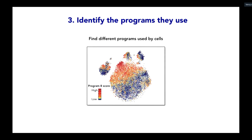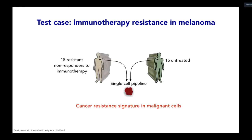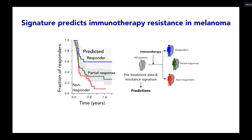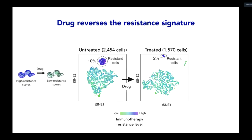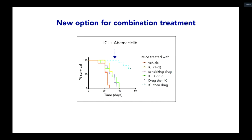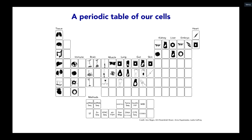The third vignette — which my colleague Orit Rosen showed in greater detail yesterday — demonstrates identifying the programs cells use. Taking 15 patients treated with immunotherapy and 15 untreated patients, we found cancer-resistance signatures in malignant cells that are predictive of patient outcome and therefore clinically meaningful. We can find drugs that reverse this signature using first computational analysis and then experimental demonstration, and then treatment in animal models, with downstream phase one clinical trials for drug combinations in patients.